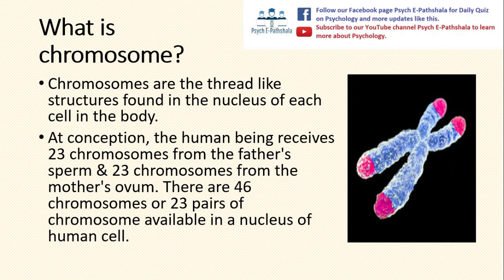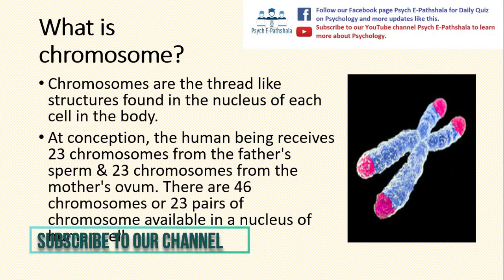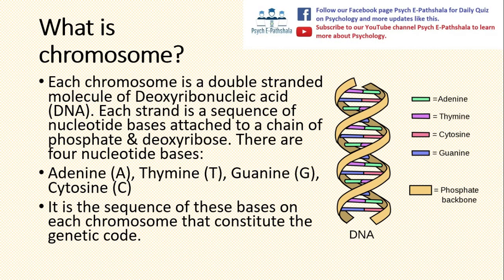The first key term we need to learn about is chromosome. Chromosomes are the thread-like structures found in the nucleus of each cell in the body. At conception, the human being receives 23 chromosomes from the father's sperm and 23 chromosomes from the mother's ovum. There are 46 chromosomes, or 23 pairs of chromosomes, available in the nucleus of a human cell.